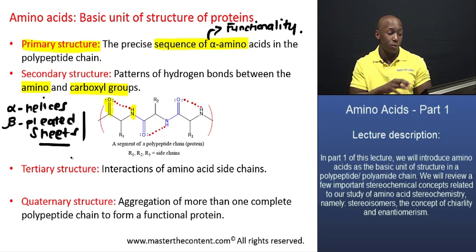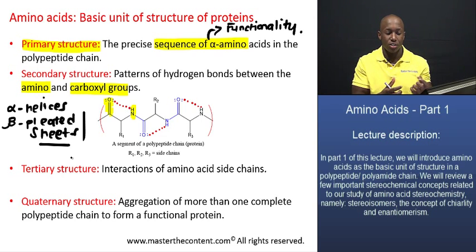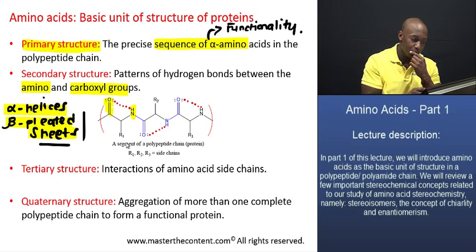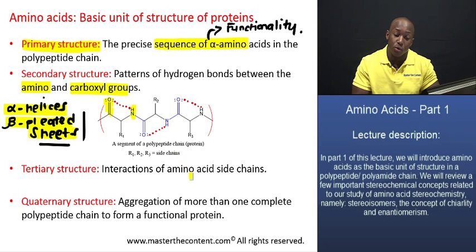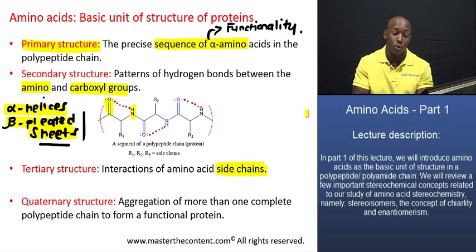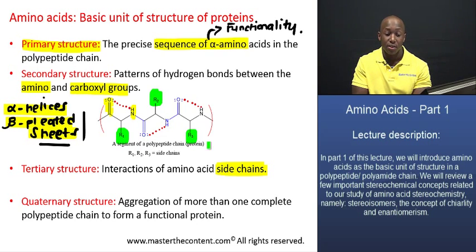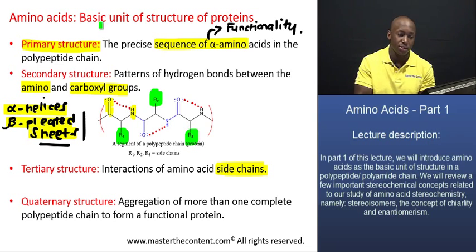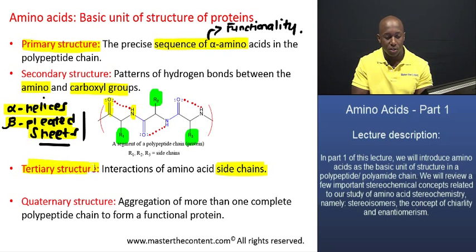Hydrogen bonding in the backbone of that chain leads to conformational changes — specifically the generation of alpha helices and beta pleated sheets — that affect the conformation of the protein's structure. At the tertiary level of organization, interactions of the amino acid side chains produce unique conformational changes in the structure of the protein as a whole. Those side groups can be largely different.